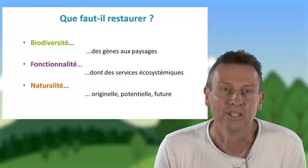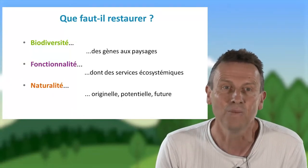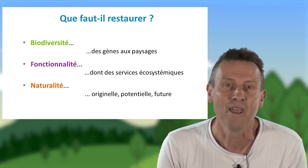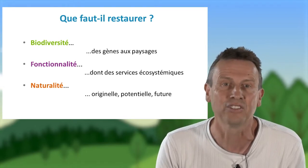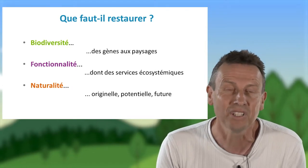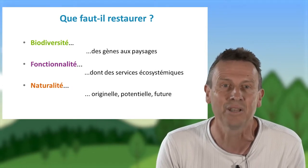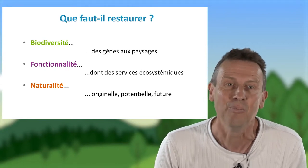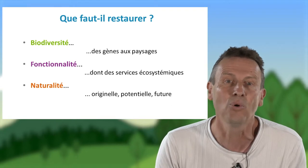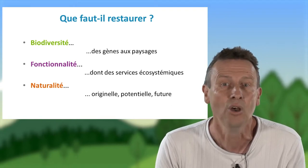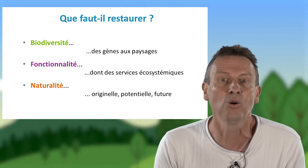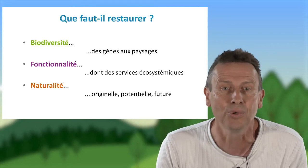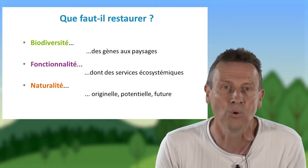Que faut-il restaurer ? Quand on restaure les écosystèmes, on peut chercher à remettre en place la biodiversité sous toutes ses composantes — animaux, végétaux, etc. — et à tous les niveaux d'organisation, c'est-à-dire des gènes au paysage. On peut également s'intéresser à la fonctionnalité des écosystèmes, aux fonctions nécessaires à leur fonctionnement, mais aussi aux services écosystémiques rendus à l'homme. On peut aussi s'intéresser à redonner du sauvage à ces écosystèmes en s'intéressant à la naturalité, notamment la naturalité future, qui s'exprimera une fois que les dégradations auront cessé.